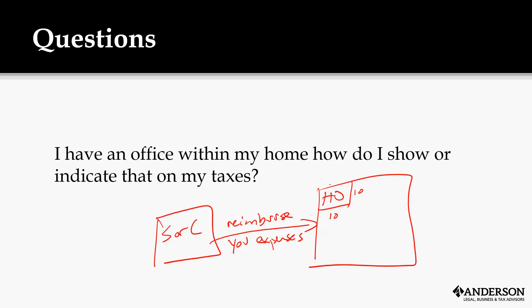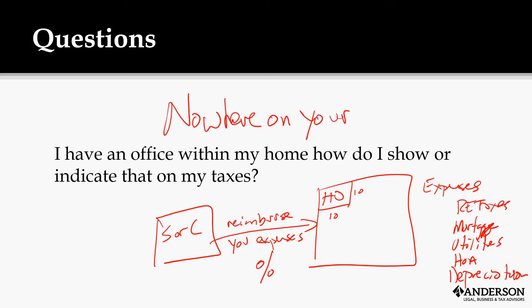The reimbursement is based off the fact that you had expenses for the whole home, and it doesn't matter whether it's a rental or a purchased home. You have expenses like real estate taxes, mortgage, utilities, HOA, even things like depreciation. It lets you pay a percentage back and nowhere on your return does this money show up.